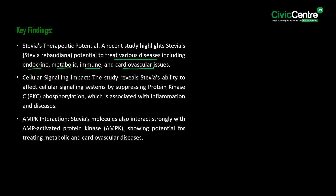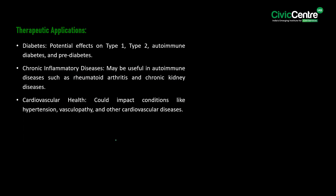The study reveals stevia's ability to affect cellular signaling systems by suppressing protein kinase C phosphorylation, which is associated with inflammation and diseases. Notably, stevia's molecules also interact with AMP-activated protein kinase, showing potential for treating metabolic and cardiovascular diseases. The researchers used a multimodal approach, combining network pharmacology with in vitro and in vivo techniques.